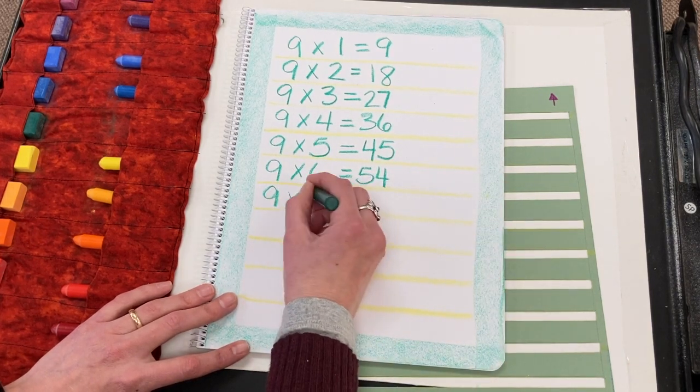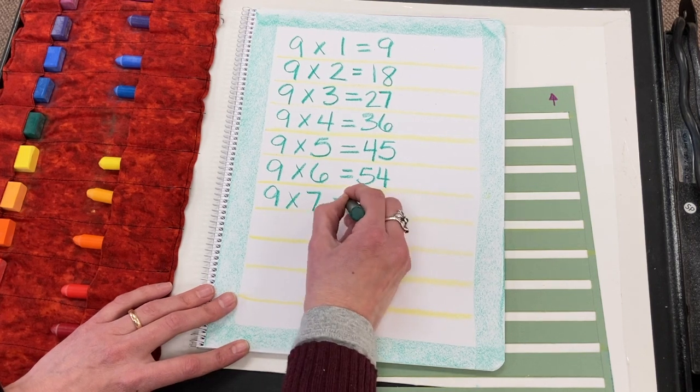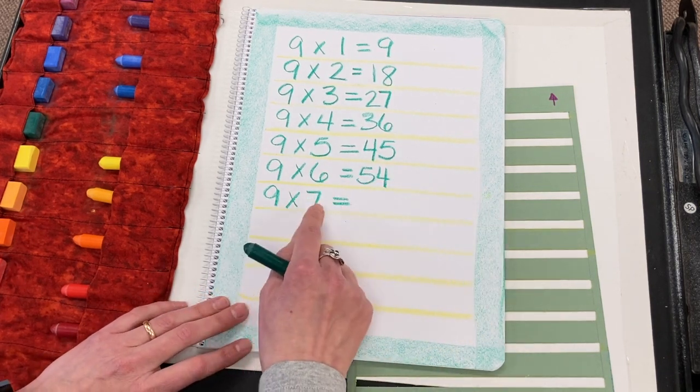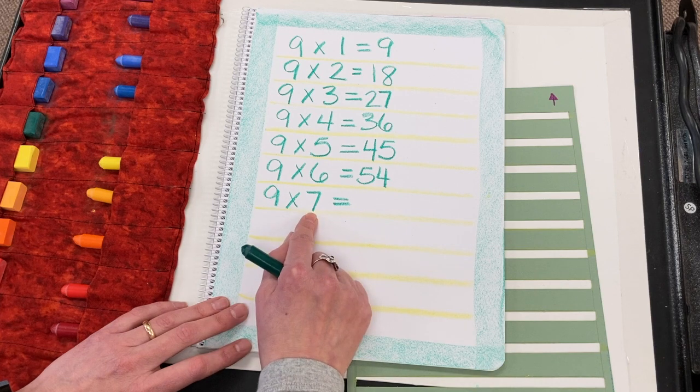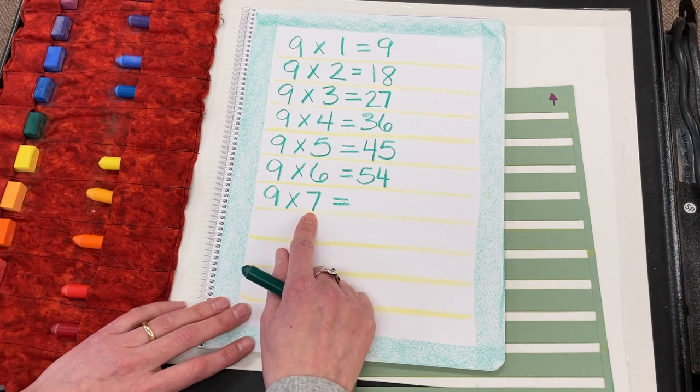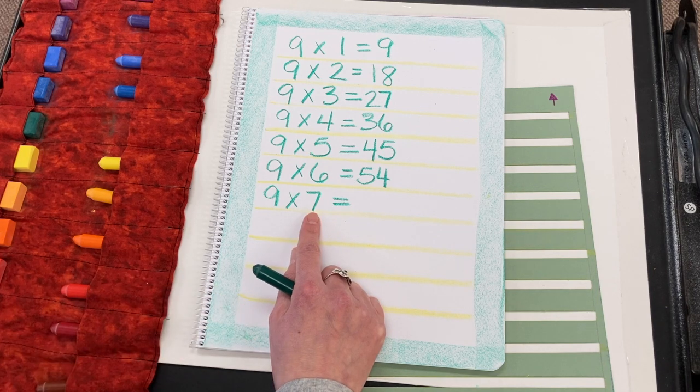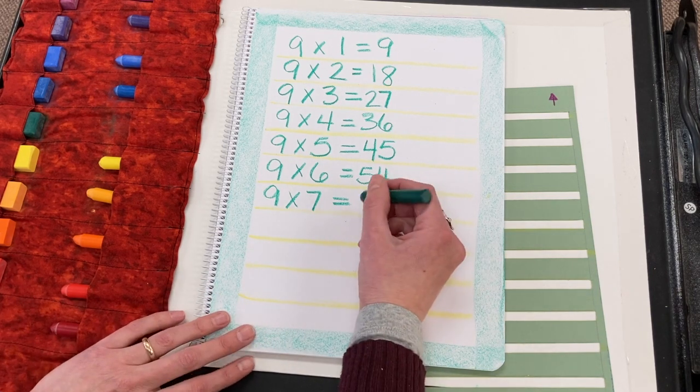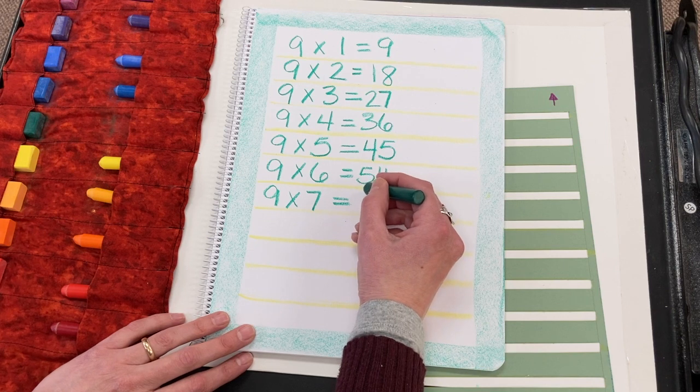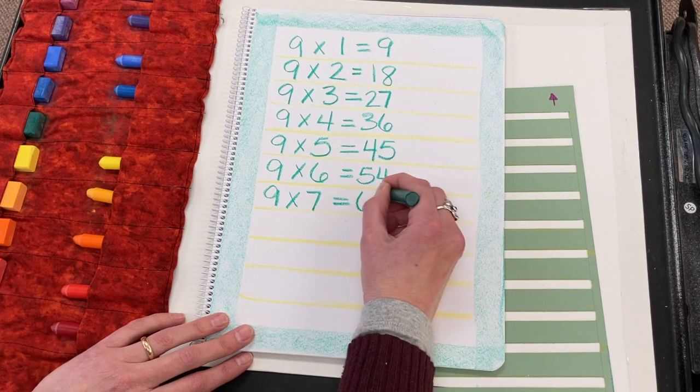9×7. Then we had signs that went surfing. And when the sign went surfing, a sticky bee got on. And so he had to pull off the sticky bee. 63.